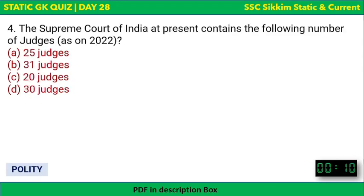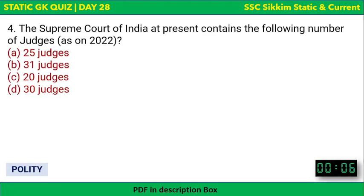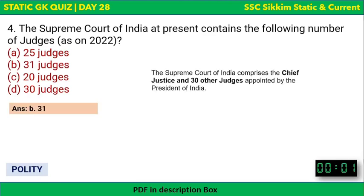Next question: the Supreme Court of India at present contains how many judges as of 2022? Options are 25, 20, 31, or 30 judges. The correct answer is 31 judges. Currently the Supreme Court comprises the Chief Justice — that is one — and 30 other judges, making 30 plus 1 which equals 31.